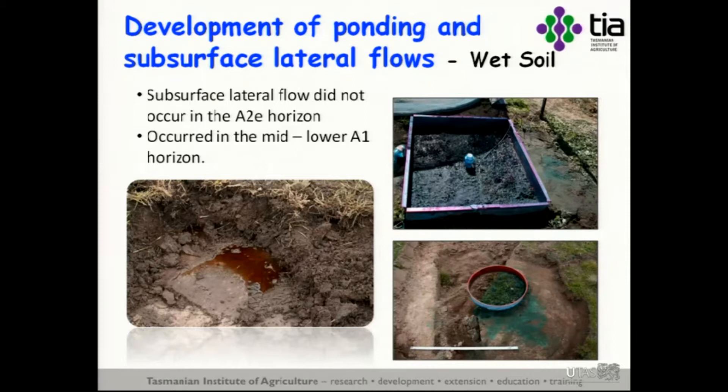What actually happened was we had flow through the A horizon where we don't expect it. This is where I was standing whilst applying the dye — it travelled underneath this barrier through the A horizon and, because I'd compacted the soil by standing there, came up underneath my feet. In this excavation we see water actually flowing above the A2 — the sandy layer — within the A1 horizon. So we do have lateral flow; it's just not occurring where it's predicted by our common understanding or modelling of soil water movement.